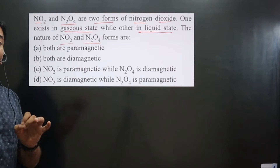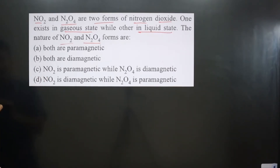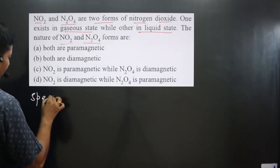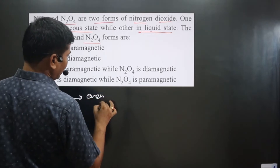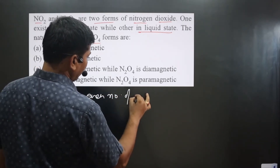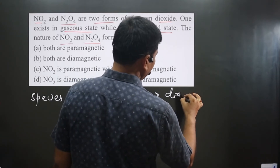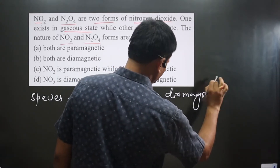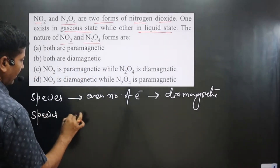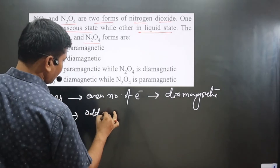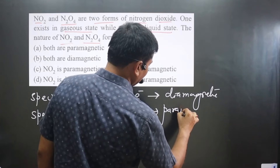To determine paramagnetic versus diamagnetic, always keep in mind: species having an even number of electrons are diamagnetic by nature, and species having an odd number of electrons are paramagnetic by nature.